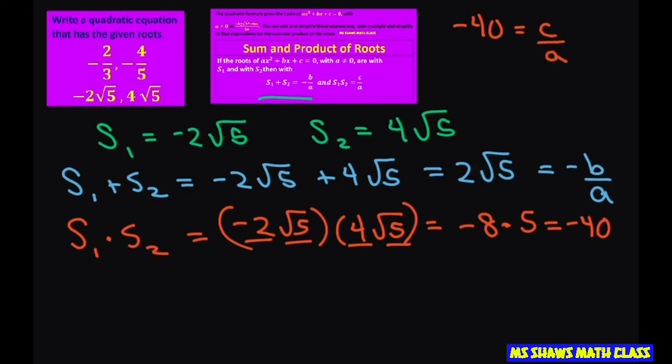Therefore, our a's do match because what we can do is put a 1 under, put these in fraction form. So our a is 1. Our b is going to be, since it's negative b and this is positive, we're going to have negative 2 square root of 5. And our c is negative 40.